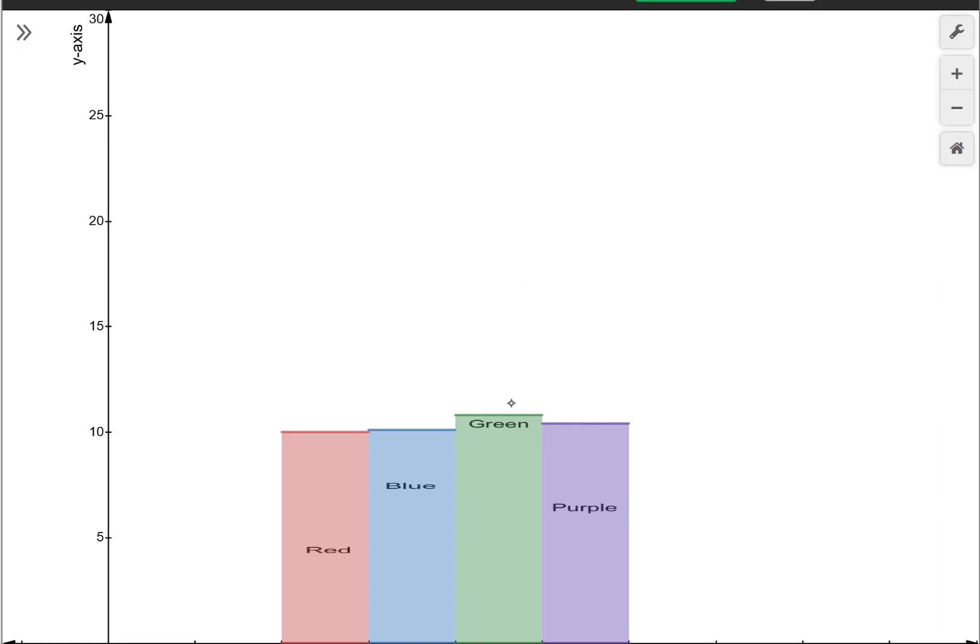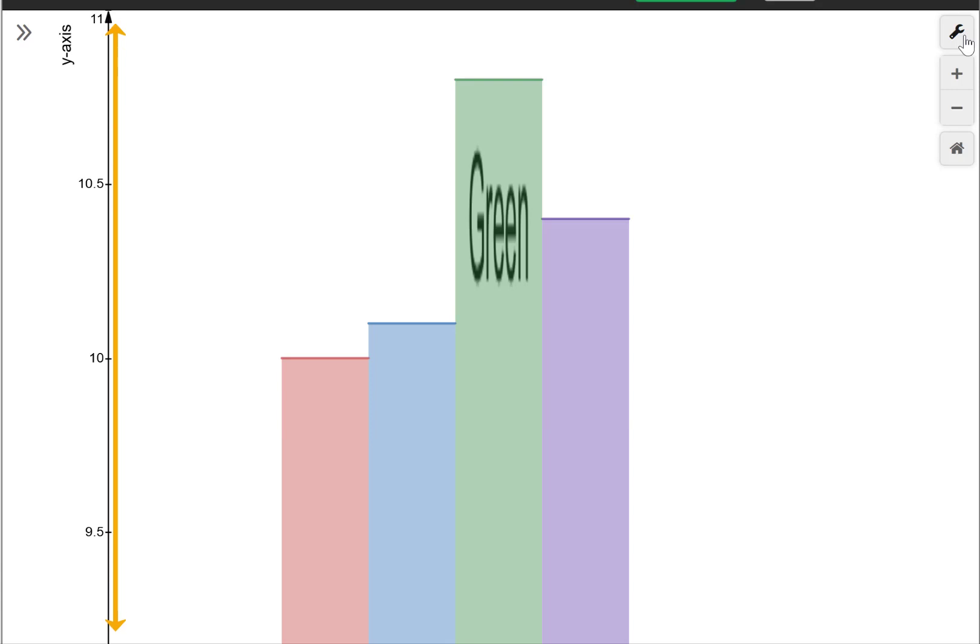However, if we zoom way in on this data, say if we just make the y-axis values between 9 and 11, that picture's going to look a little bit different. Besides my graph looking really terrible now, you can see that it appears that the data varies quite a bit. And all I did was change the scale on my y-axis. We just zoomed way in on this data to make it look like there's a lot of variety in the values.